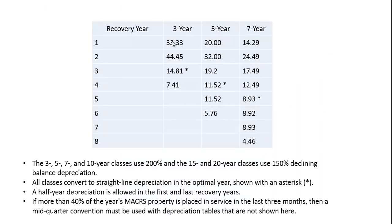This is what the table looks like. I've shown three-year, five-year, and seven-year schedules, though there are others based on asset class. Three-, five-, seven-, and ten-year classes use 200% declining balance depreciation, while the 15- and 20-year classes use 150% declining balance. You may have covered double declining balance in accounting class — this is a similar accelerated depreciation approach. All classes convert to straight-line depreciation in the optimal year, shown with an asterisk.